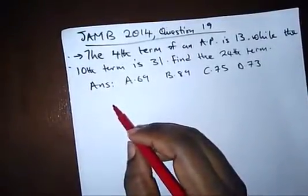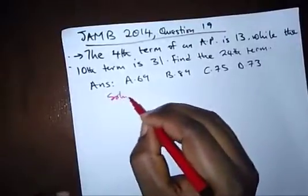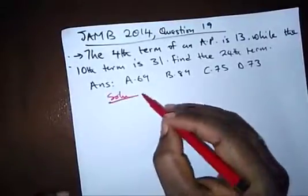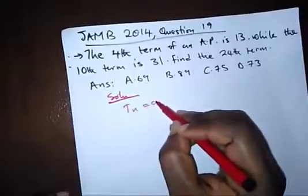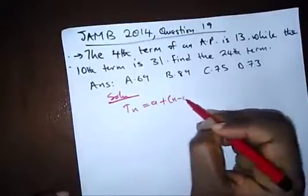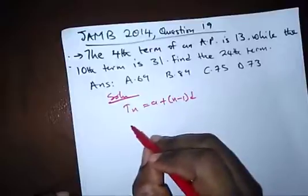This looks like a simultaneous equation here. So we have, remember our formula? TN = A plus N minus 1 bracket D. That's to find the Nth term.